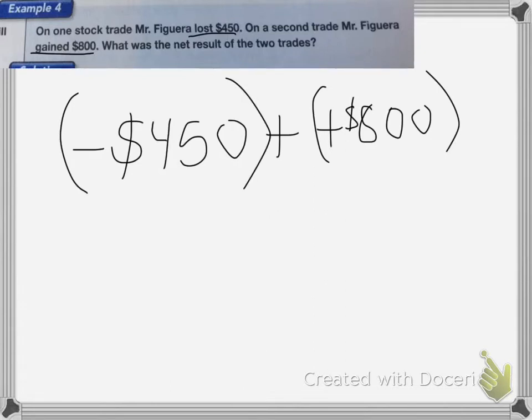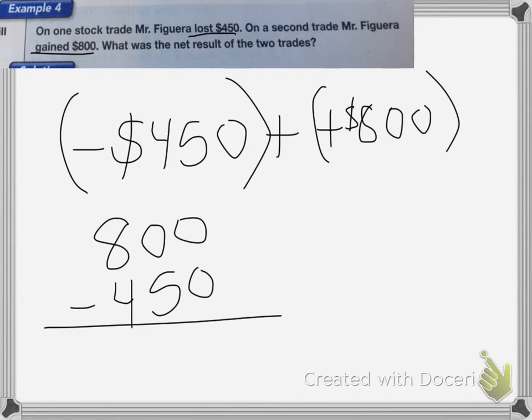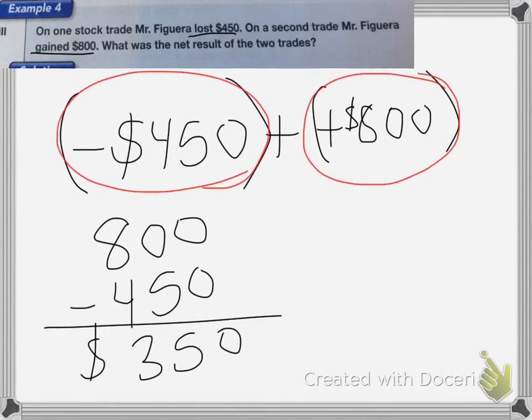When I add these, I'll do 800 minus 450, and I end up with $350. The sign is going to be positive because the positive 800 is bigger than the negative 450. So he gained $350 over the two trades. And that's it for this lesson.